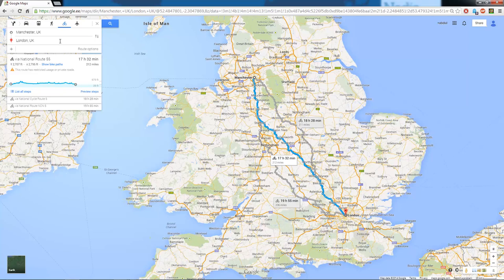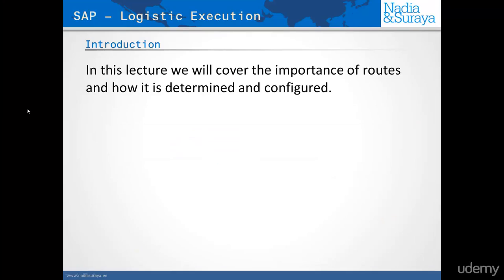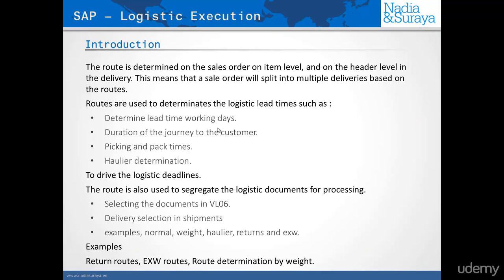In SAP, we will see how a particular route has all of these properties. A route is determined on the sales order at each individual item level, so each item could have a different route or they could all have the same route. Be aware that when you create the delivery, that route is copied onto the delivery header. This means we could have a scenario where a single sales order has multiple routes, and the sales order would be split across multiple deliveries, each delivery having a different route.